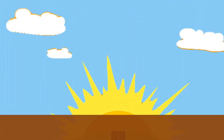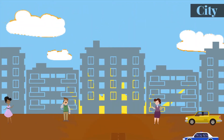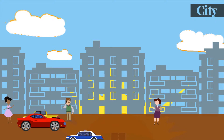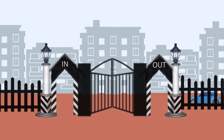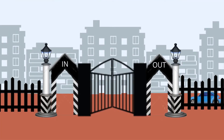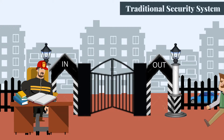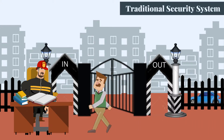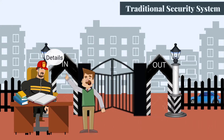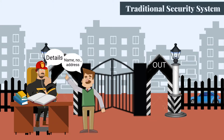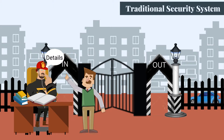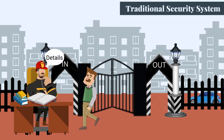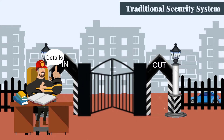Maintaining the safety and security in public places has become one of the greatest challenges in the modern age. In residential premises, we tend to rely on the data provided by the visitors in the visitor's book. There is no mechanism available to record the accurate data and verify the data provided by the visitors to ensure the safety and security.